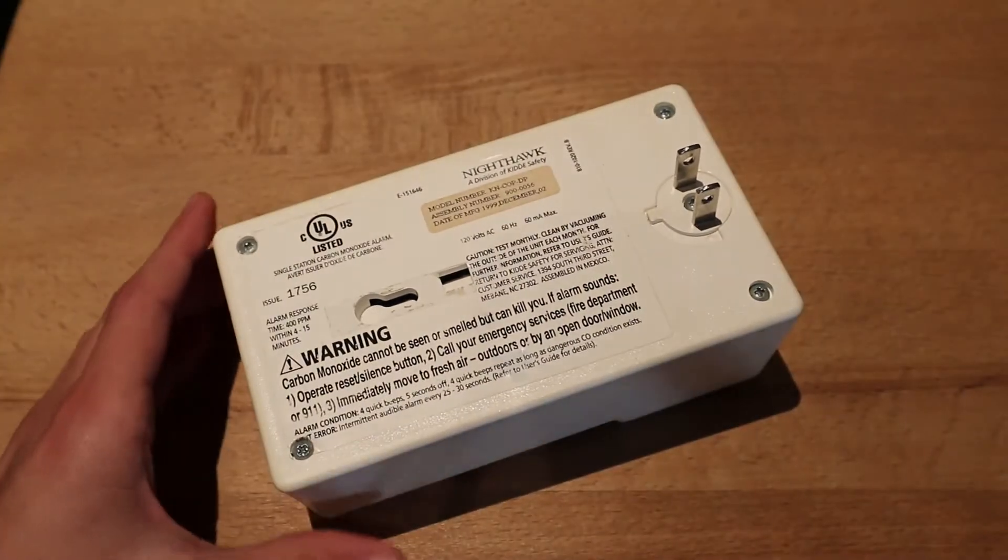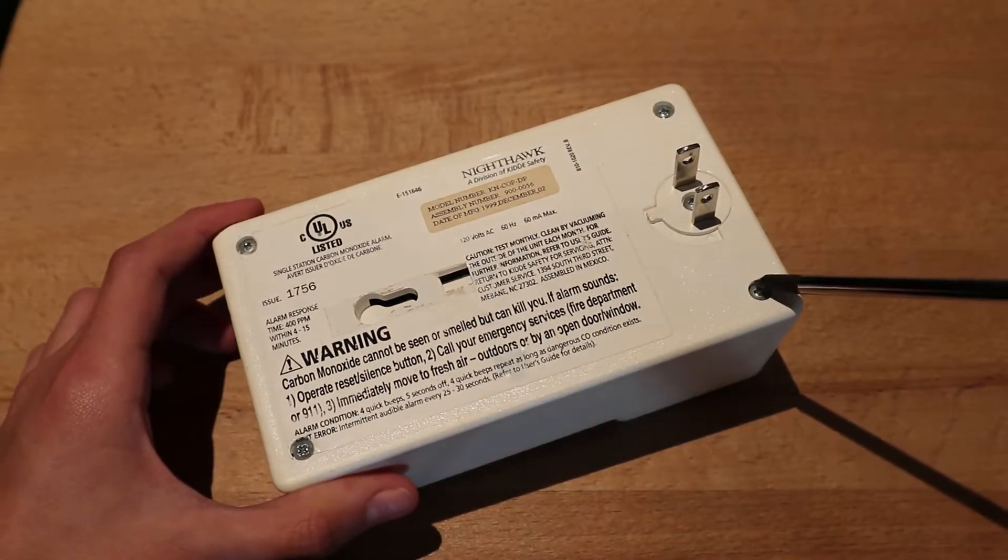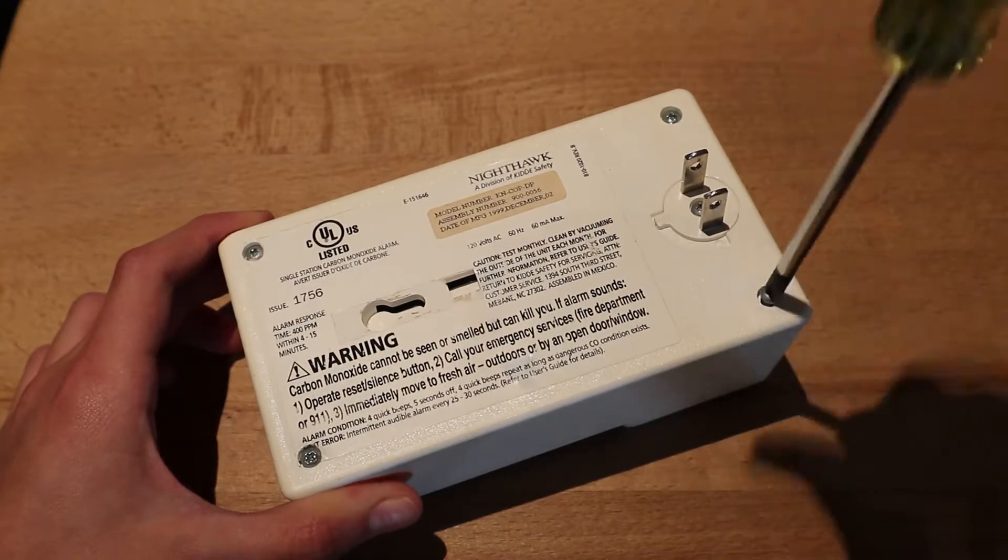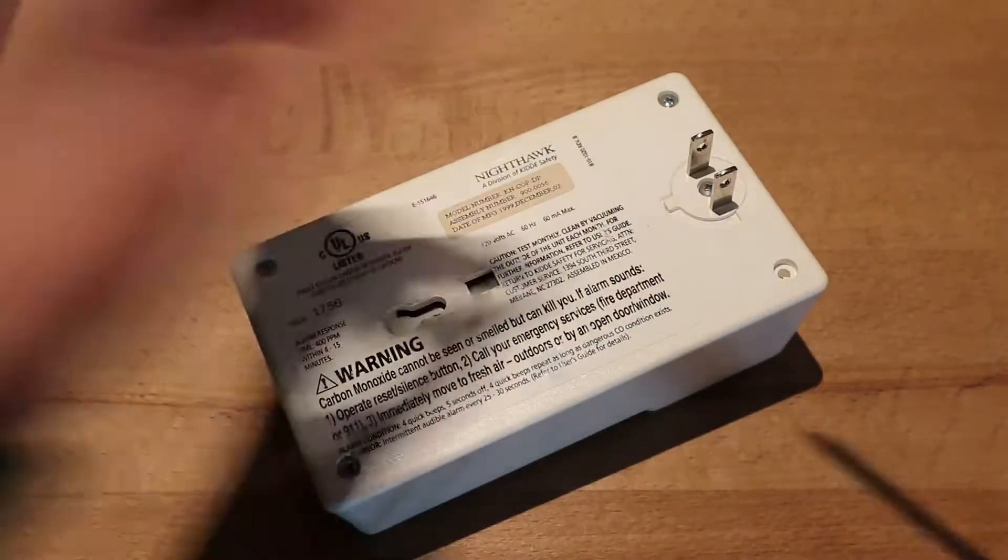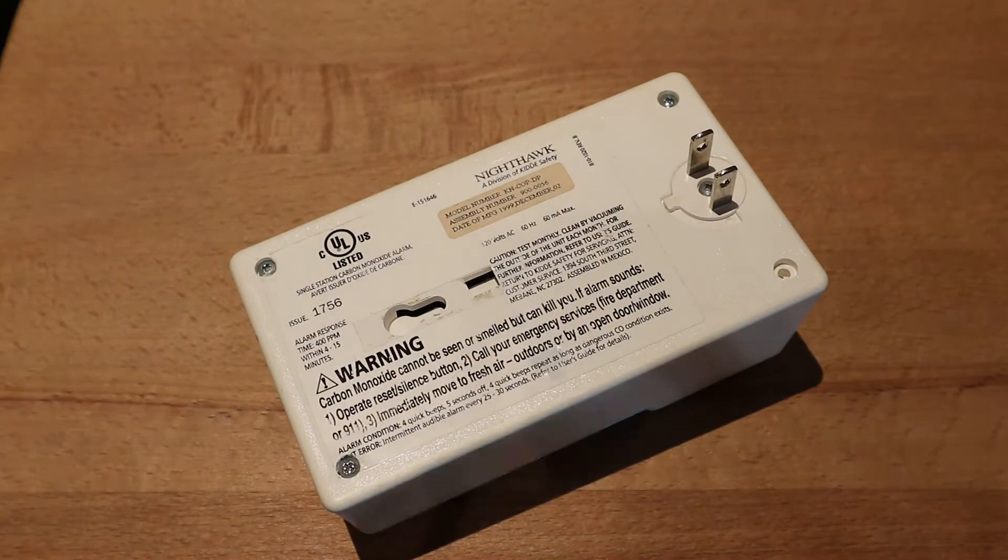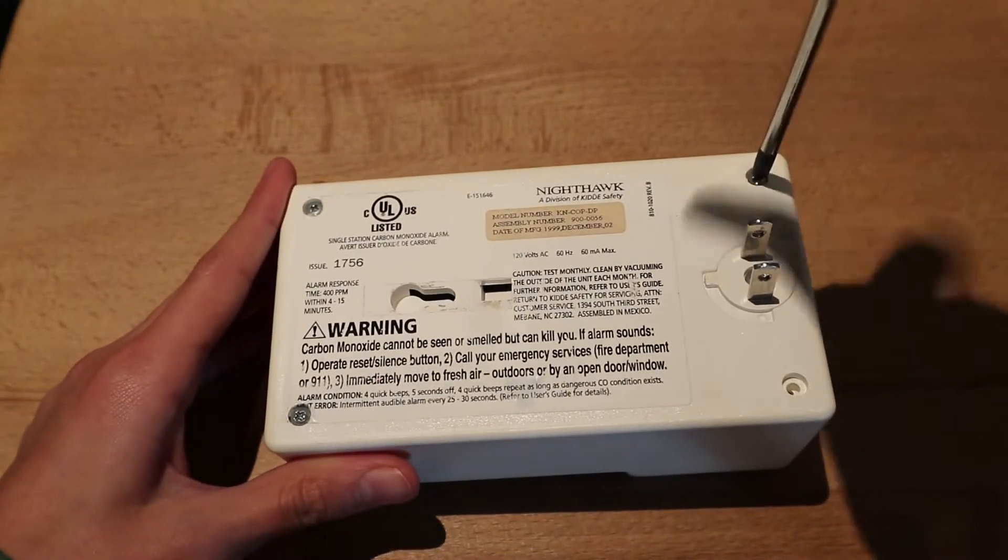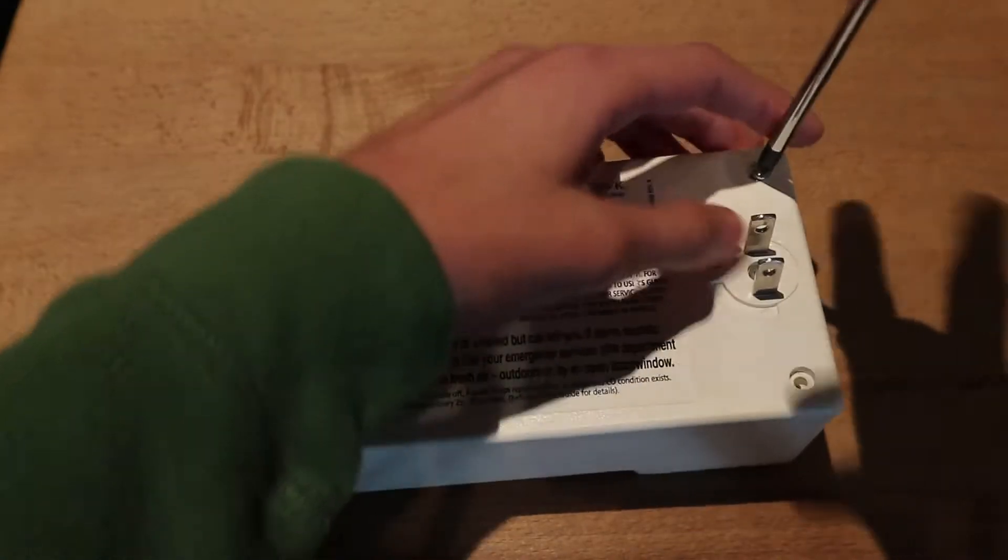So now let's take this thing apart. There are four screws securing the back panel to the main part of the unit. And we will also look at the sensor inside.